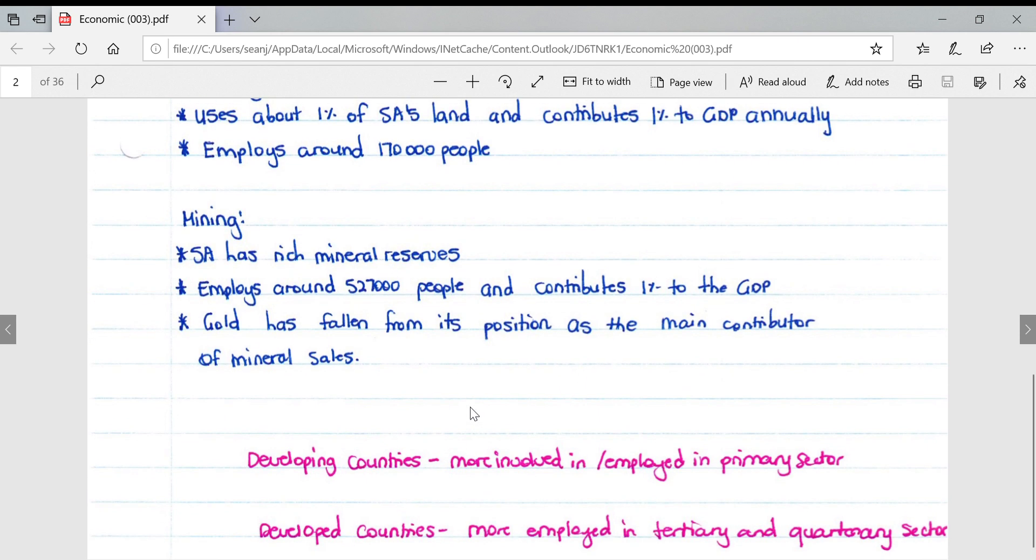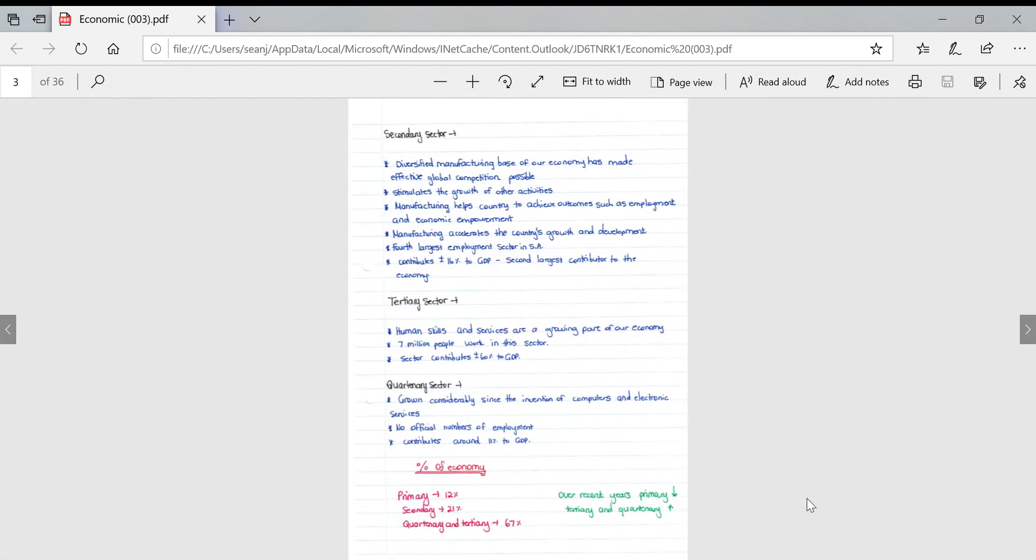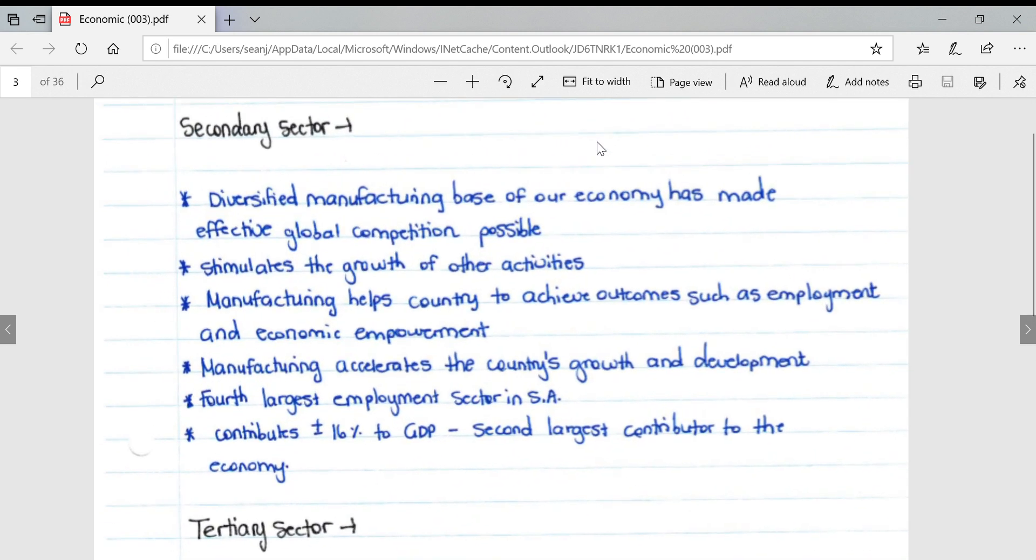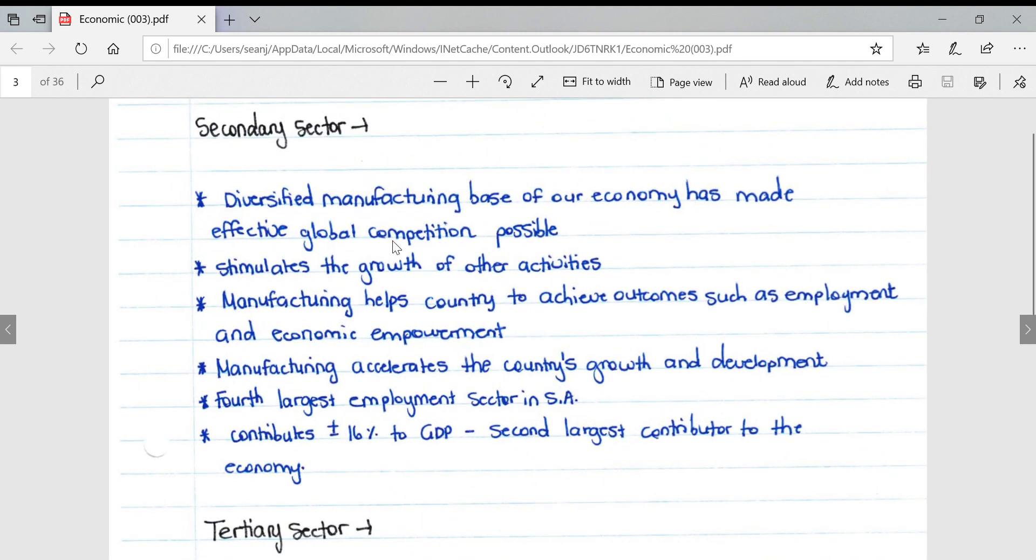Gold has fallen from its position as the main contributor of mineral sales. Developing countries are more involved in the primary sector, whereas developed countries are more employed in the tertiary and quaternary sectors.